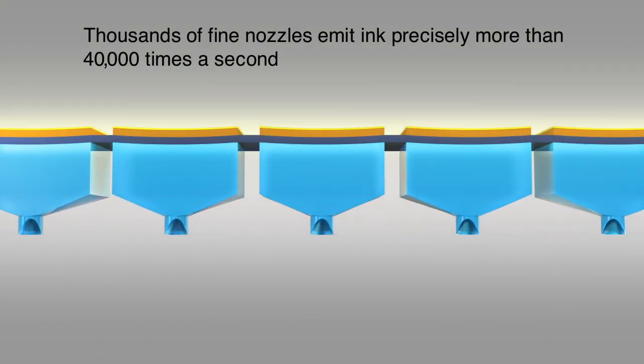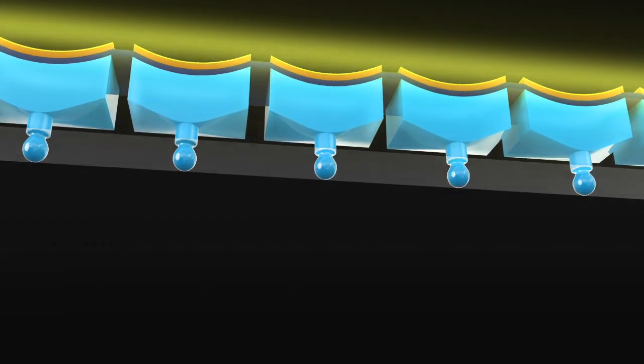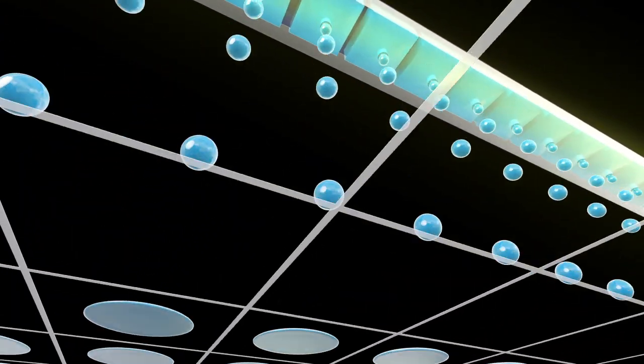Each printhead contains densely arranged rows of these sets, with each one firing precisely the right amount of ink at precisely the right place more than 40,000 times a second.